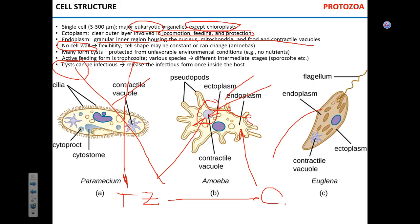Trophozoites can obviously be infectious. If you consume a giardia trophozoite, you're going to get giardiasis. But you can also consume giardia cysts and it can be infectious too — a cyst will become a trophozoite inside your gut and cause disease. When people with giardiasis have a bowel movement, you can actually observe both trophozoites and cysts in the feces, and these cysts can be consumed by another person and cause disease.